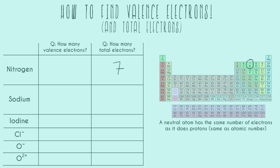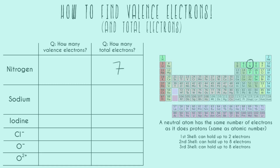Now let's answer how many valence electrons nitrogen has. For these first two examples I'm going to draw everything out and then I'll get into the shortcut. To draw everything out we have to learn a second rule: the first shell can hold up to two electrons, the second shell can hold up to eight, and the third shell can hold up to eight as well. For this tutorial I'll just be going into the first three shells.